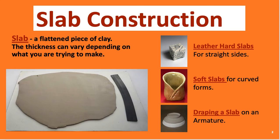Slab construction — a slab is a flattened piece of clay. We can do several different types of slab construction. Leather hard slabs are where you let the clay get hard so it stays in its shape and does not bend; that's good for boxes. Soft slabs are when you want something curved. You can also drape a slab over an armature or mold, and it will dry and maintain that shape.